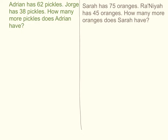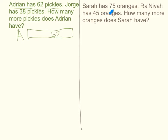Let's come back to my story problem. I know that Adrian has 62 pickles — he already has that. So I'm going to make a bar model of Adrian's pickles: Adrian has 62 pickles. This rectangle I've drawn represents Adrian and his 62 pickles. On your problem, let's read the first sentence again together: Sarah has 75 oranges. Can you turn that into a bar model? Pause the video while you make the first part of your bar model as I did for Adrian.